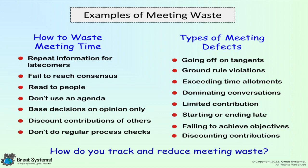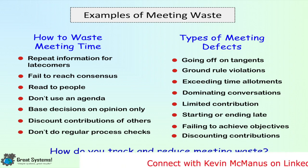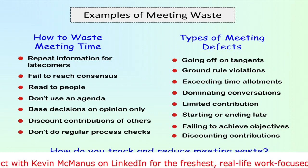Because meetings are a process, they inherently contain waste. To identify your meeting waste, begin by identifying your most common types of meeting defects. The easiest way to find these defects is to look for ground rule violations. In order to identify meeting ground rule violations, you have to define ground rules for the team. Does anyone remember when we used to have those?